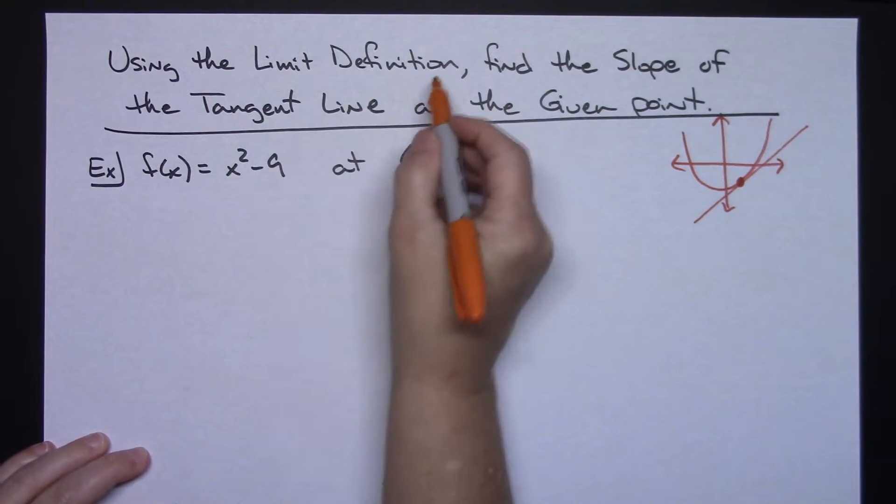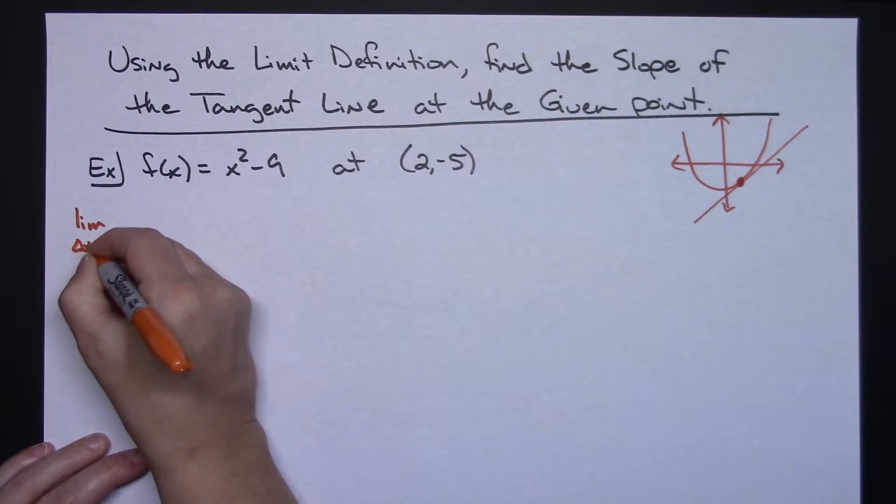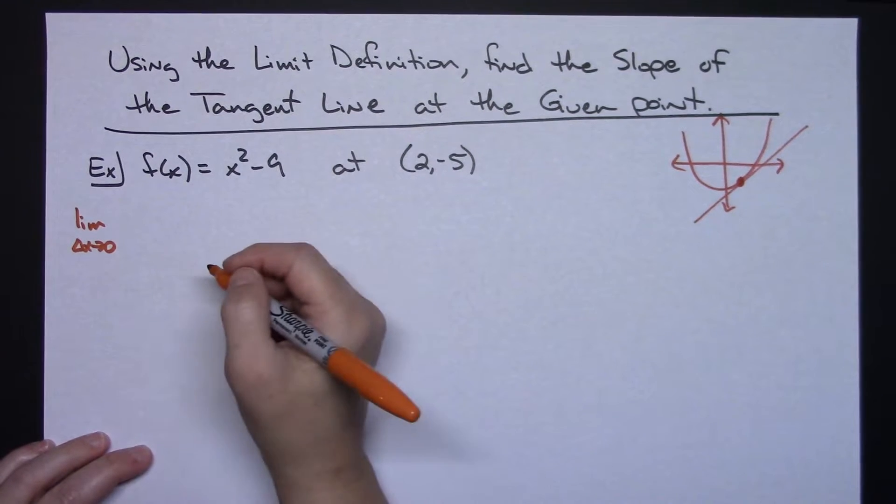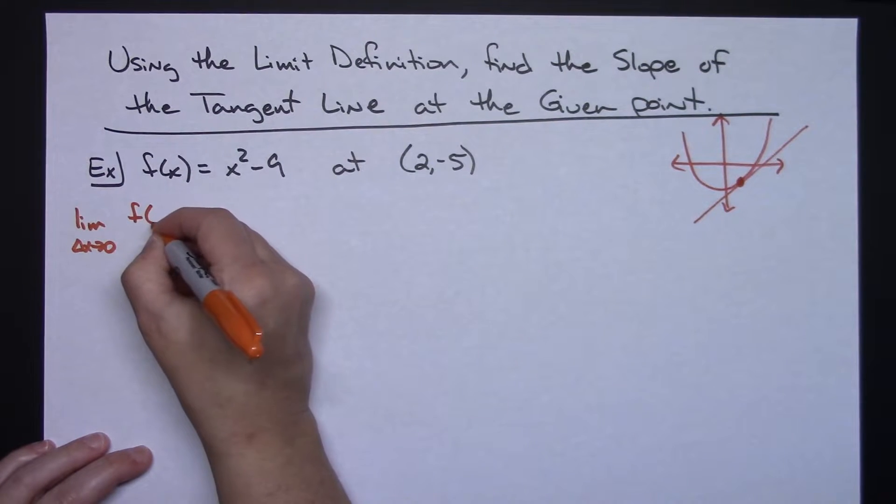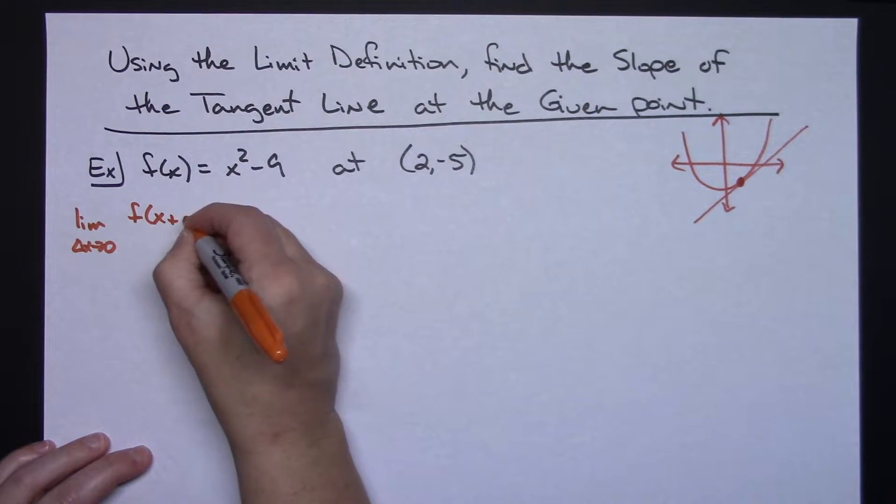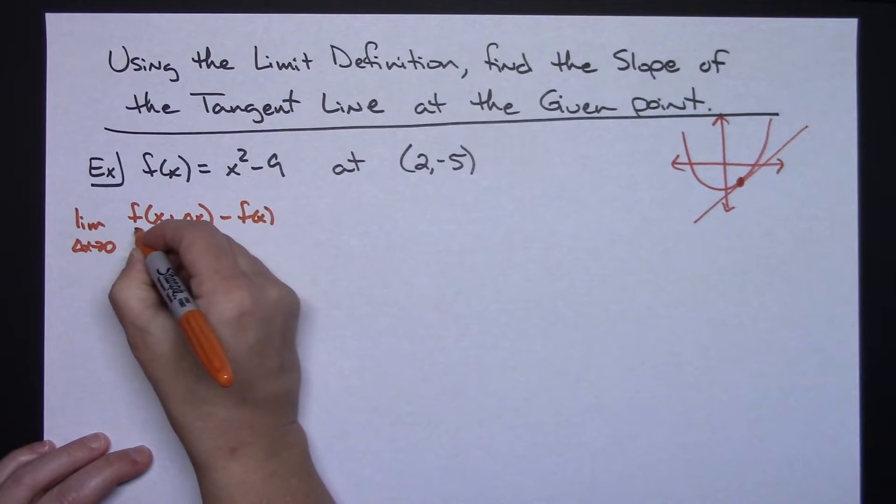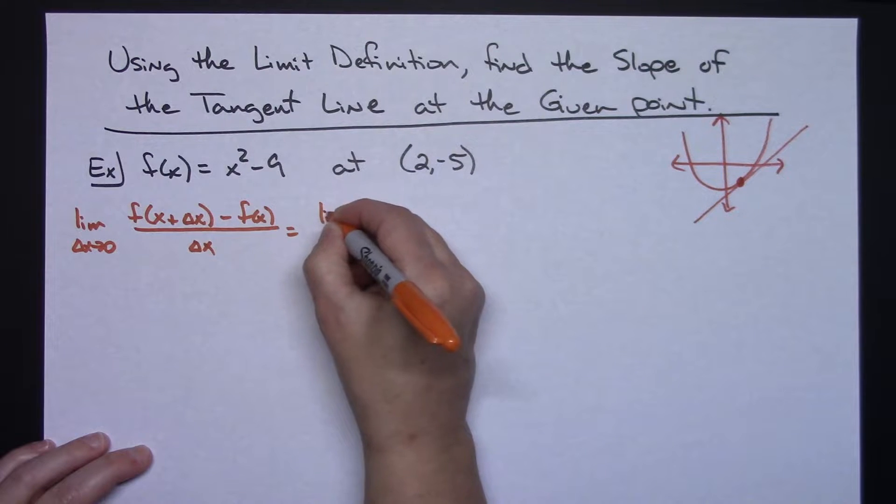We're going to have to do the formal limit definition. That means the limit of the difference quotient, the limit as Delta X approaches 0 of the difference quotient. That would be F of X plus Delta X minus F of X all over Delta X.